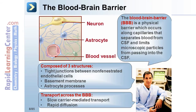Transport across the blood-brain barrier can occur by the following mechanisms. First, there is slow carrier-mediated transport, which is a mechanism for moving glucose and amino acids into the brain, and rapid diffusion of non-polar or lipid-soluble substances.